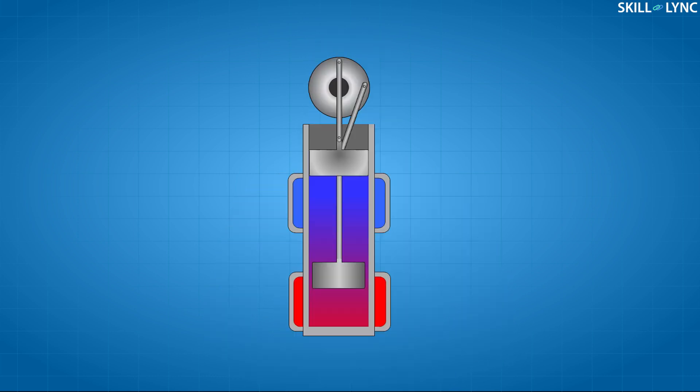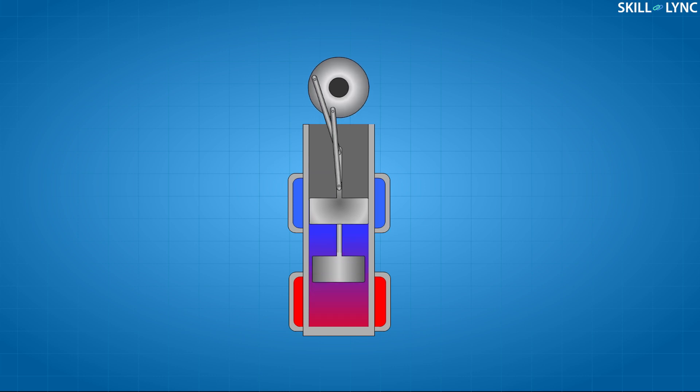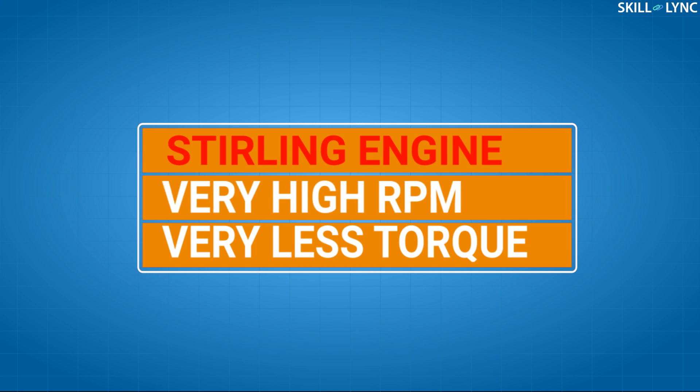However, this method of obtaining motion is extremely inefficient and removes the entire point of having an engine. To increase working efficiency, Robert Stirling introduced the displacer. The displacer shuttles air between the hot end and the cold end of the cylinder, allowing both heating and cooling to occur in a single cylinder at the same time. This drastically increases the working efficiency of the Stirling engine.